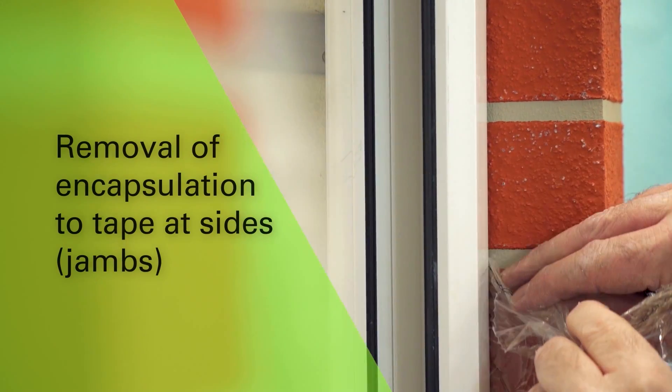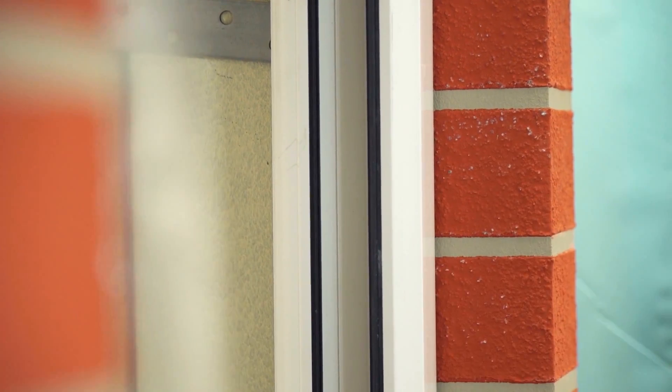With all four sides of the window now sealed, the encapsulating sleeve is removed from the TP601 and the tape will now expand to fully seal against the brickwork at the jams.